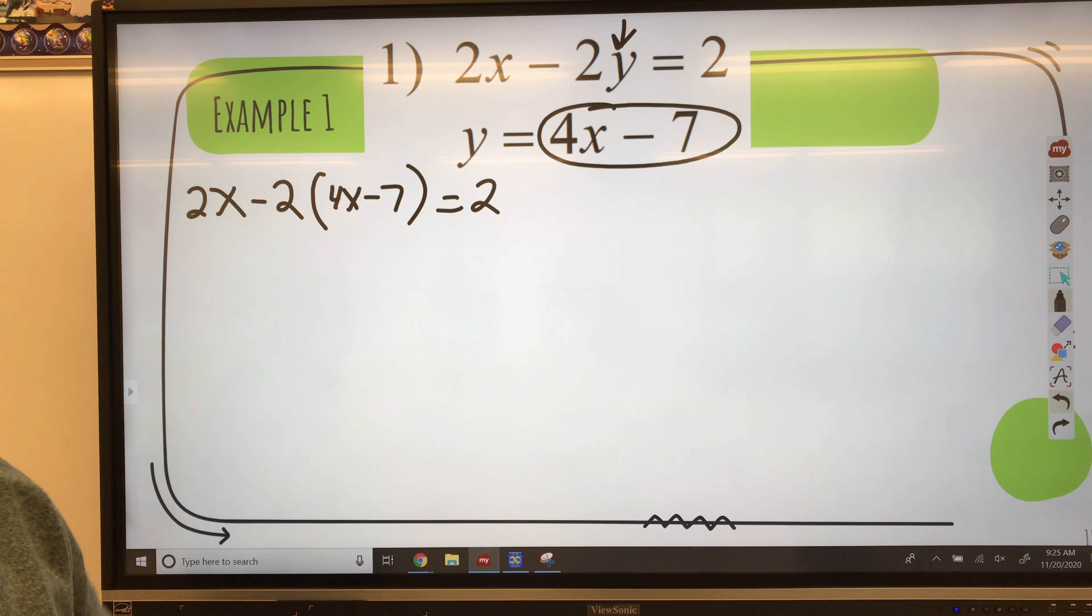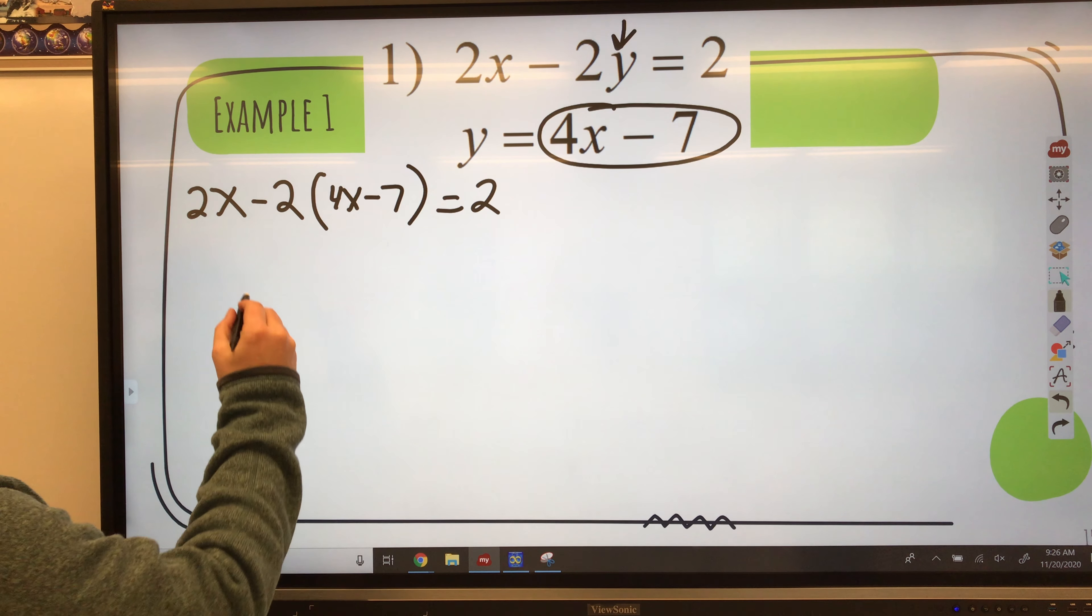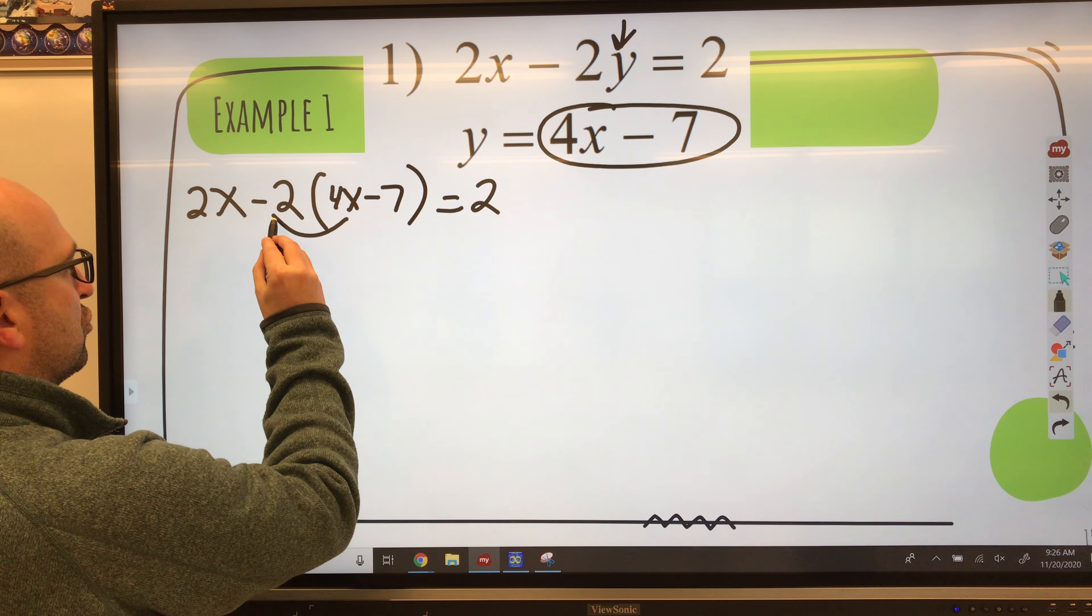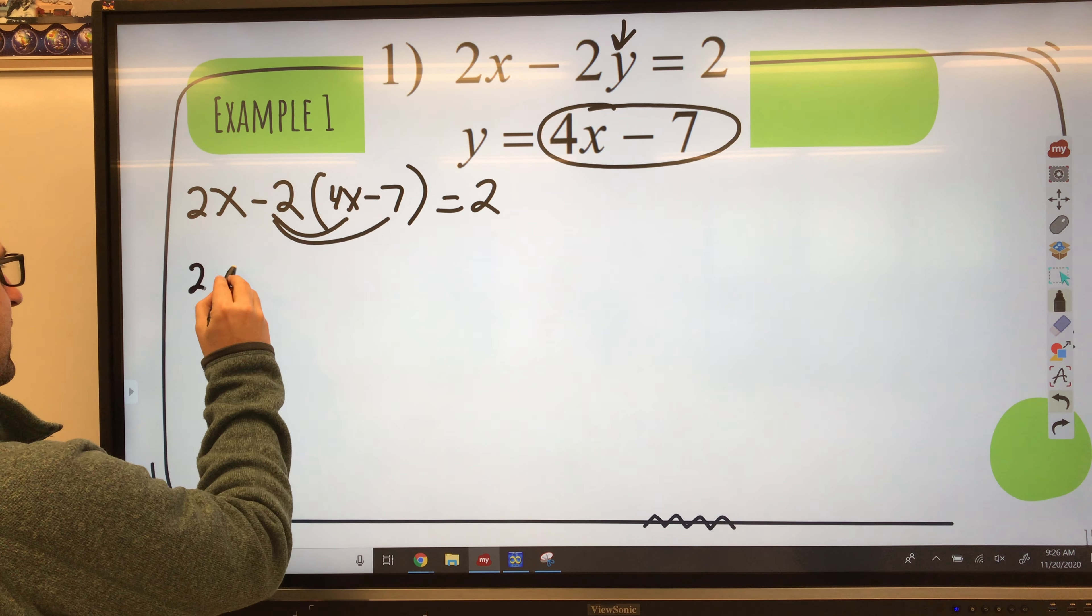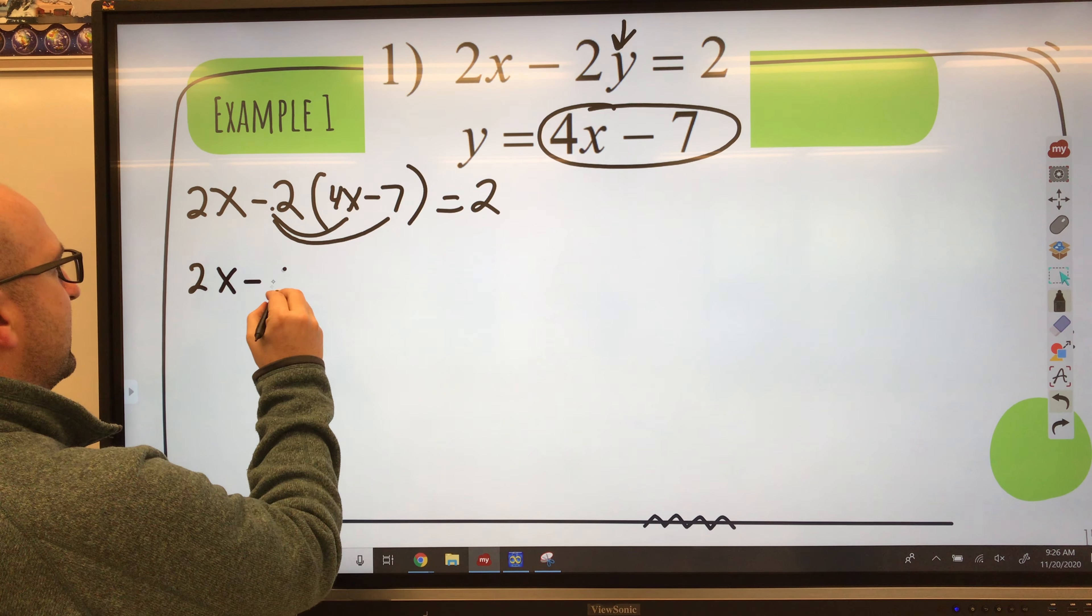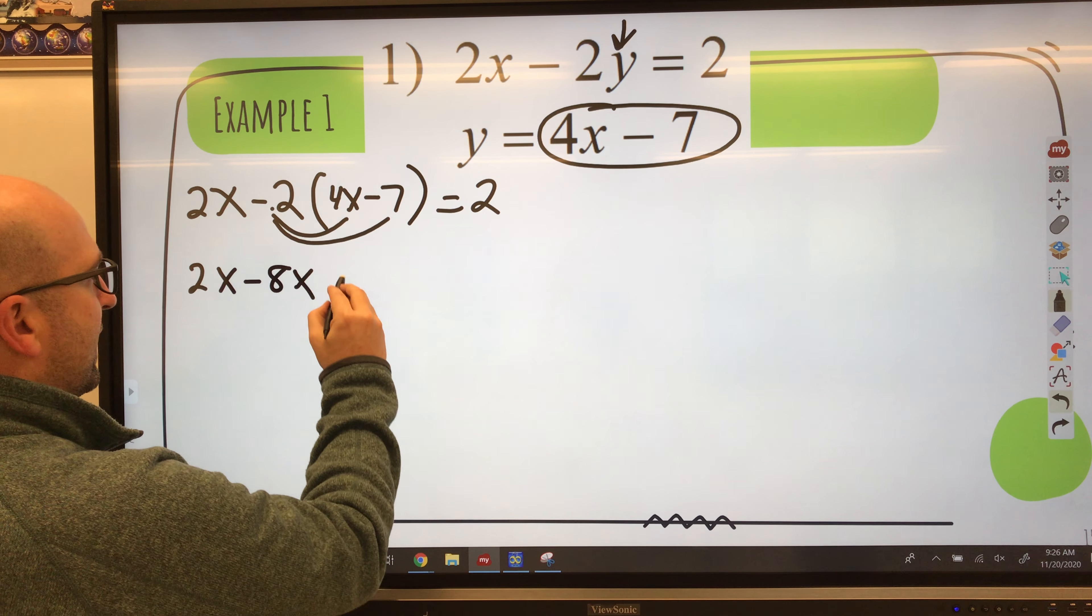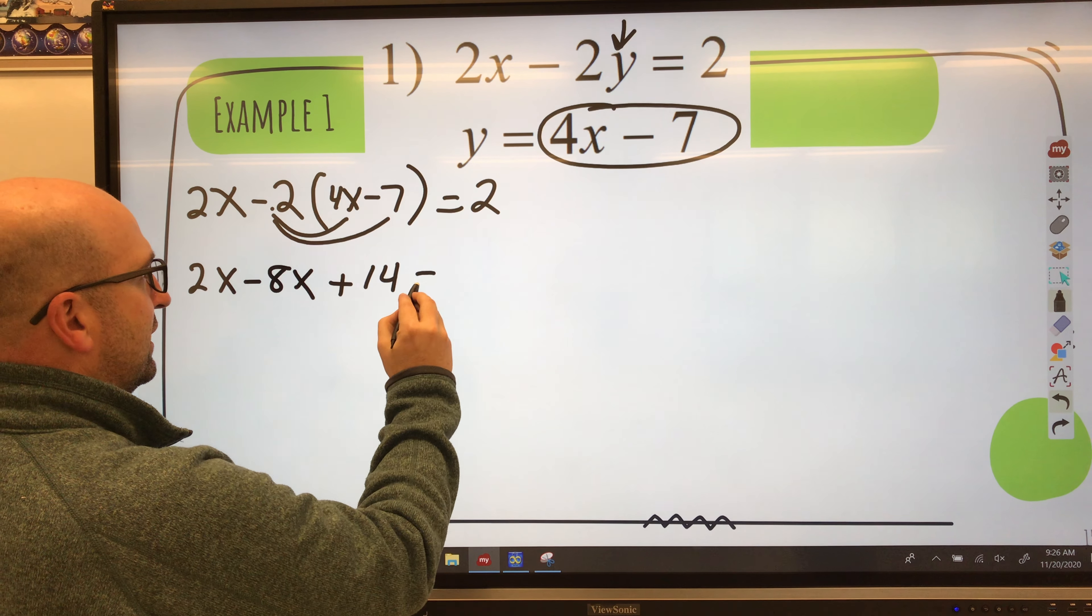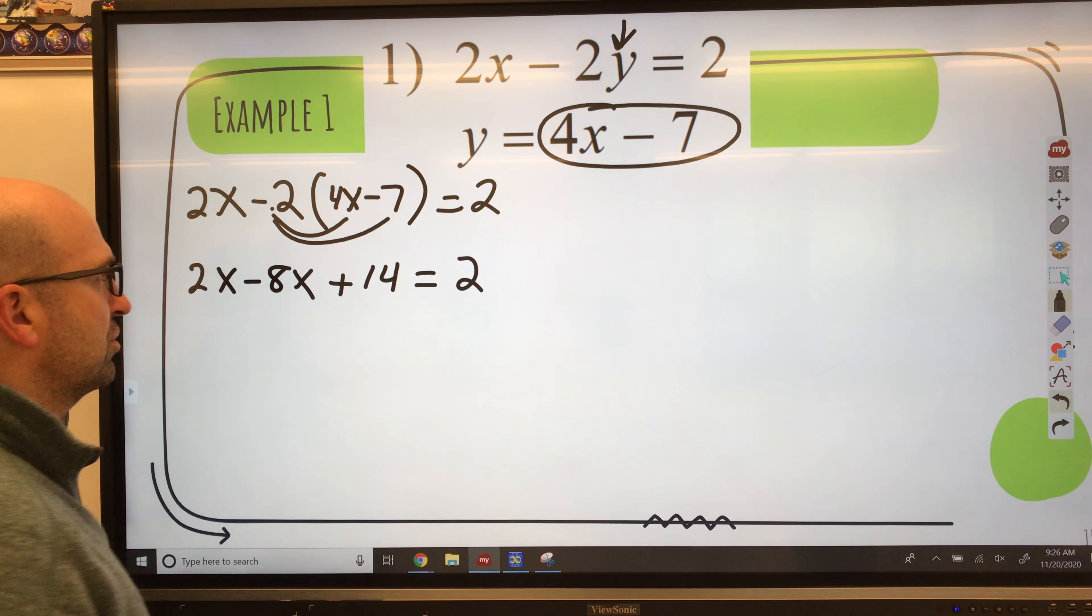Now here's my equation I've got to solve. And I'm going to find a value for x. But first I've got to distribute. So I write this down. 2x. Negative 2 times 4x is negative 8x. Negative 2 times negative 7 is positive 14. Equals 2.